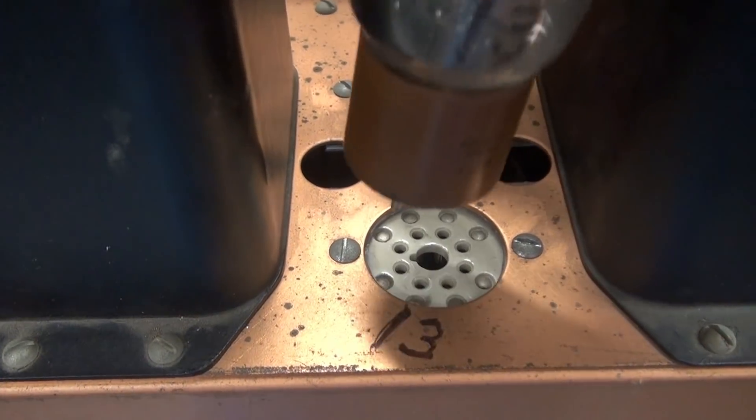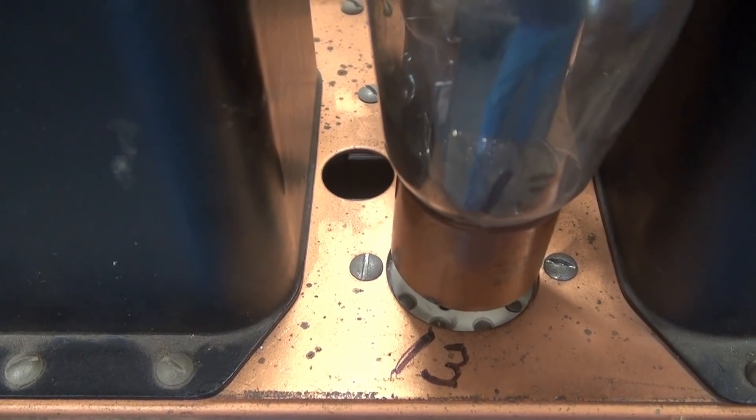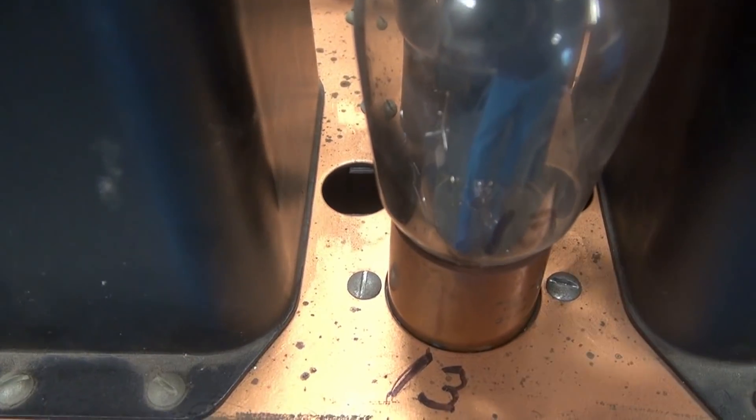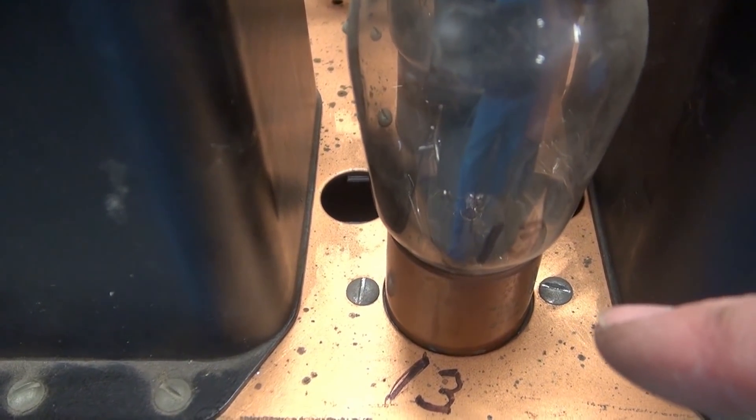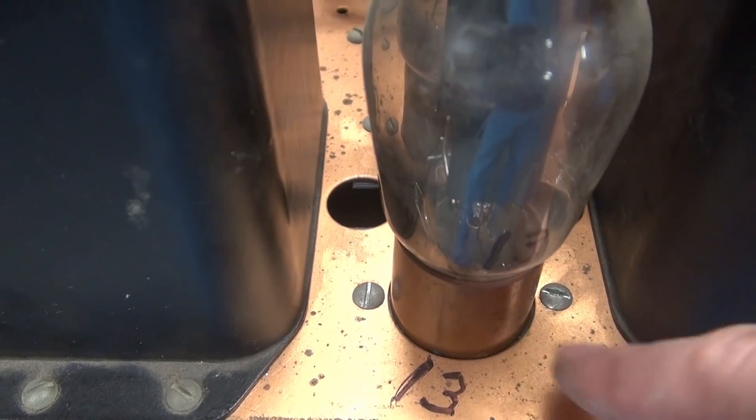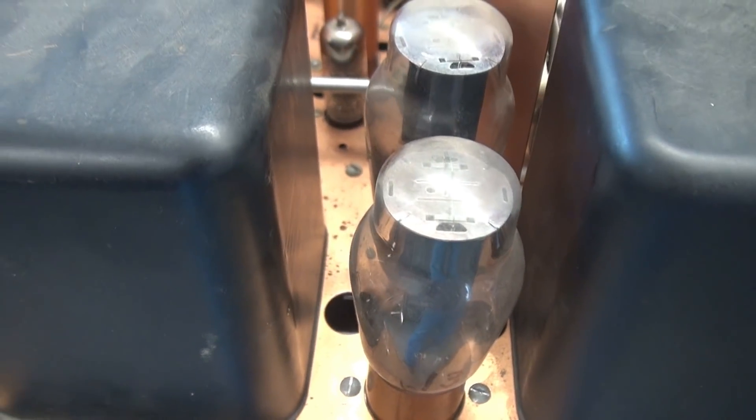So as you can see, it's a pretty tight fit. So you want to make sure when you put those holes in your new nylon insulators that they clear the base of the 5R4 rectifiers.